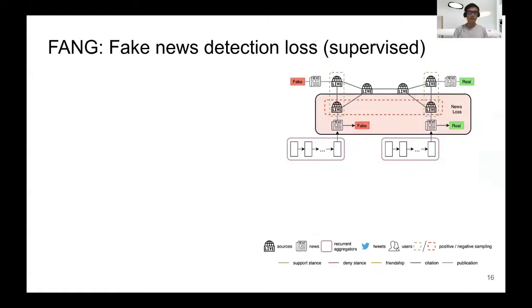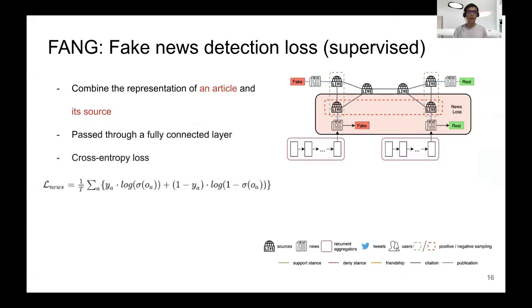Finally, we have the fake news detection loss, which is fully supervised. We combine the representations of an article and its source obtained from the graph stage. We then pass it through fully connected layers, and then we have a cross-entropy loss for our supervised objective.